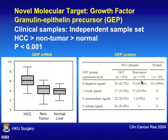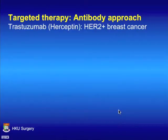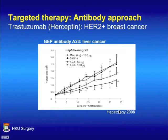Growth Factor Granulin Epithelium Precursor, GEP, is the focus as a molecular target. An independent sample set was recruited at both mRNA and protein levels, and strong GEP expression is only observed in tumor tissue. For targeted therapy, antibody approaches have shown to be feasible — the classical example being trastuzumab, trade name Herceptin, which is effective for a subset of HER2-positive breast cancer. We have shown that the GEP antibody can inhibit tumor growth in an animal model.